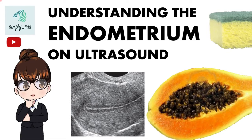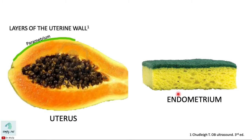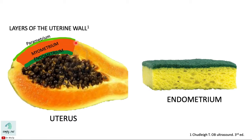Hi, welcome back. Today we're going to learn about the appearance of the endometrium as seen on ultrasound. To help us remember, imagine that this fruit is the uterus and this sponge is the endometrium. The uterine wall has a parametrium, a thick myometrium, and an inner endometrium.